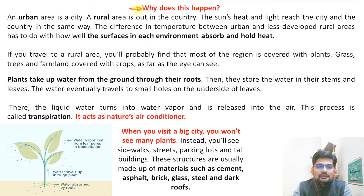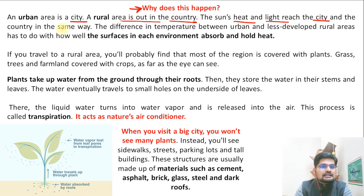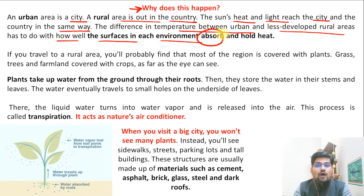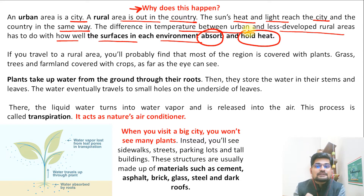Why does this phenomenon happen? An urban area is a city and a rural area is the countryside — there is a difference. In climatology, the sun's heat and light reach the city and the country in the same way, with no differentiation. The difference in temperature between urban and less developed rural areas has to do with how well surfaces in each environment absorb and hold heat. If urban areas hold more heat, it becomes trapped as an island, while rural areas with soil cool quickly and do not retain heat.